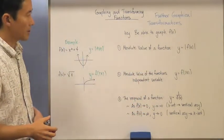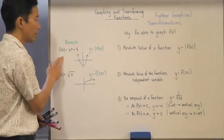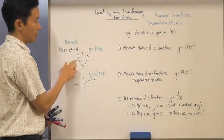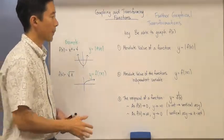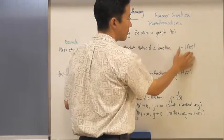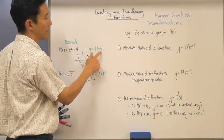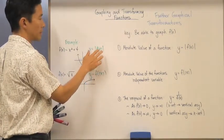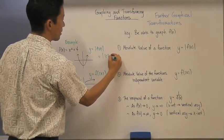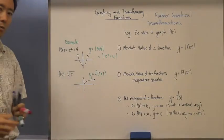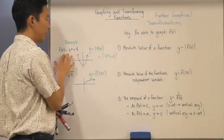Let's start off with number one. What if you have the graph already of f of x? Let's take a look at an example. Let's say f of x is equal to x squared plus 4, and I made a simple graph of what that looks like. What if you actually took the absolute value of that function? So in other words, what if y is going to be equal to the absolute value of f of x, or the absolute value of x squared plus 4?